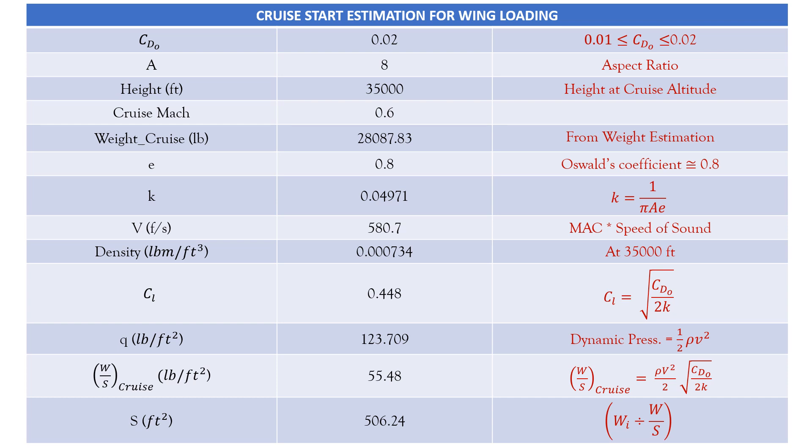Then we have Q, which is nothing but dynamic pressure that equals half rho V square, giving us a value of 123.709 pounds per feet square. And we have W by S at cruise. So using the formula, we got the W by S at cruise. And using all, we ultimately find the wing area S that equals 506.24. This wing area will be used for calculations in takeoff and landing parameters.